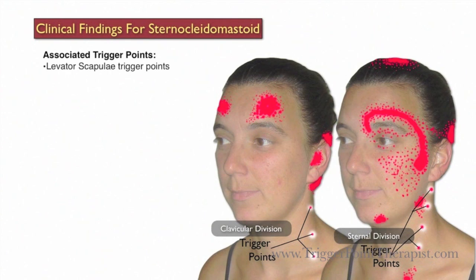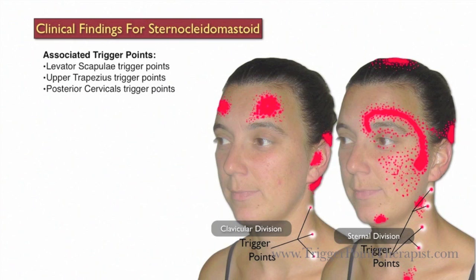Trigger points in the levator scapula, upper trapezius, and posterior cervical muscles are all associated with trigger points in the sternocleidomastoid muscle.